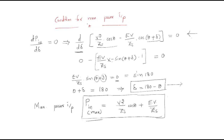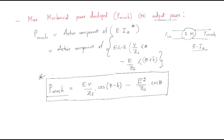In the last session we discussed the mechanical power input. The mechanical power input value is: EV/Zs · cos(θ - δ) minus E²/Zs · cosθ. Now we will find out the condition for maximum mechanical power developed.